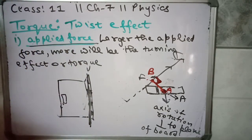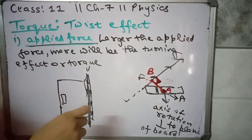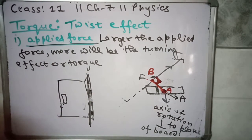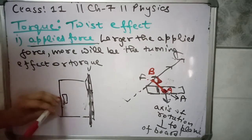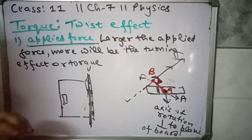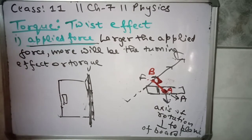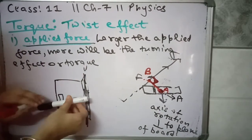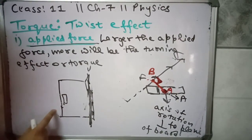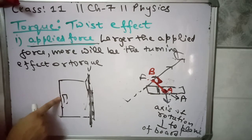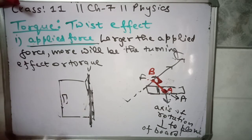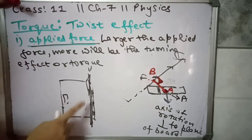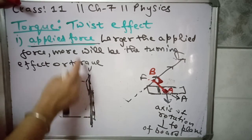So the first factor of twisting effect is the applied force. When you open the door, the direction of force and the line of action of force — the perpendicular distance from this line to the axis of rotation is the lever arm. The distance is maximum when the handle is at the end point of the door. So: applied force multiplied by perpendicular distance — the lever arm — gives the turning effect.